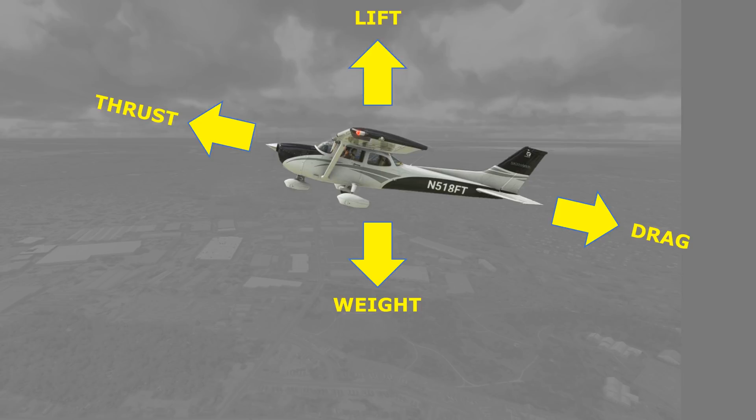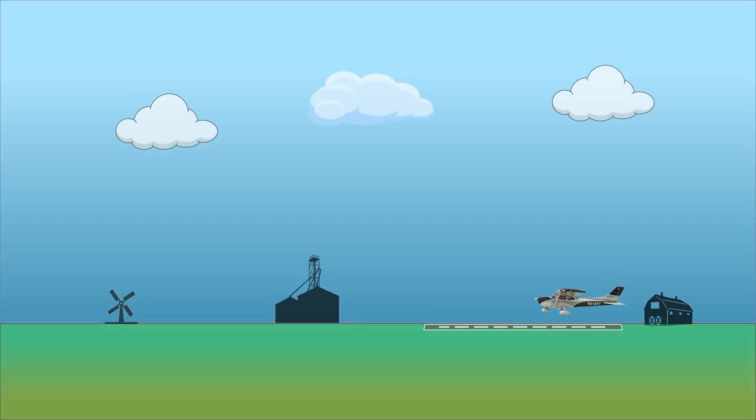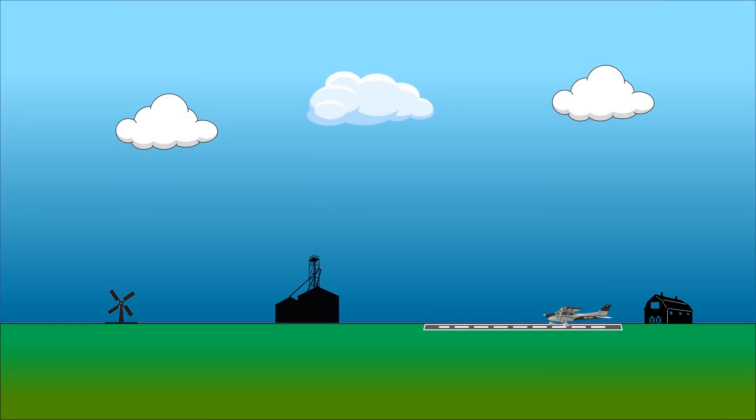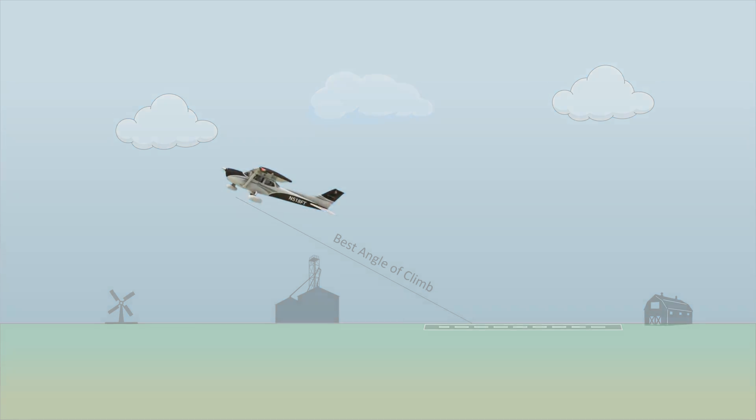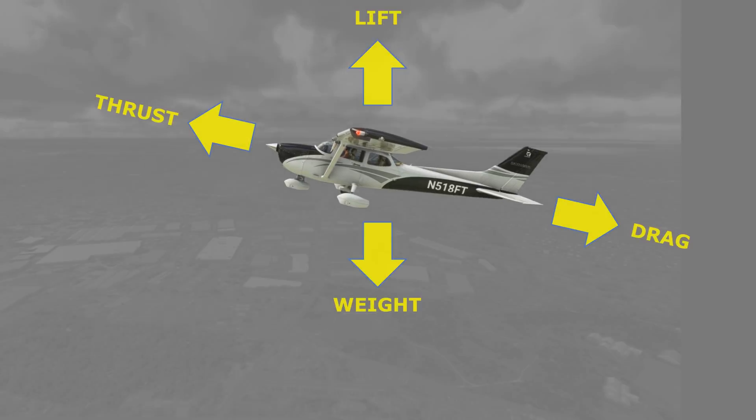There are times when we want the greatest possible climbing force to allow us to gain a certain altitude in the shortest distance traveled, most often on takeoff, trying to clear an obstacle near the runway. We're looking for our best angle of climb. It's the strongest force that will give us this, and therefore we need the most excess thrust we can muster.